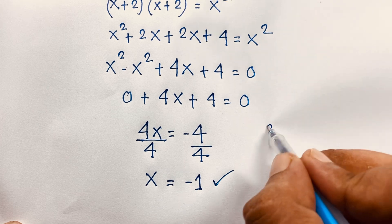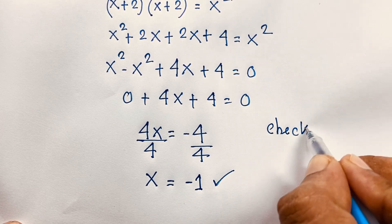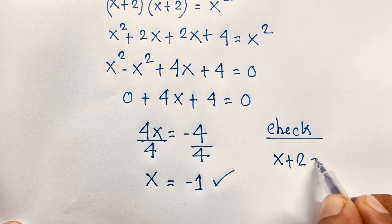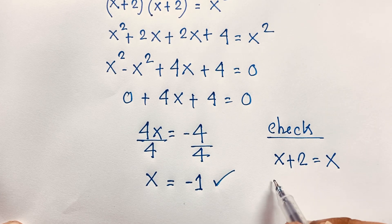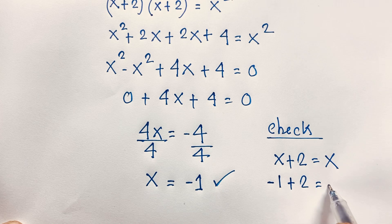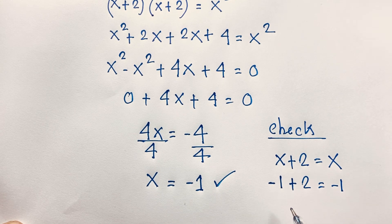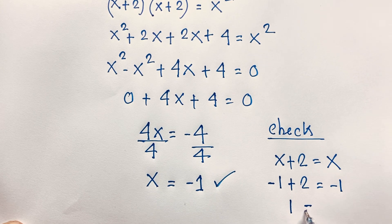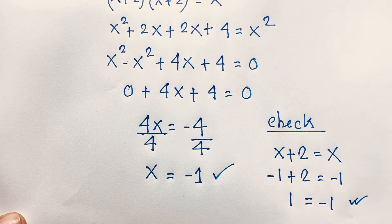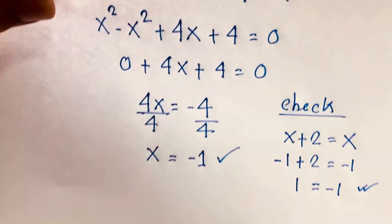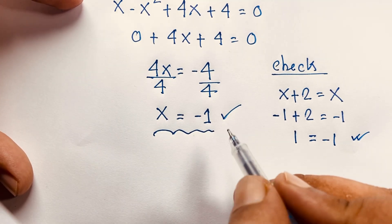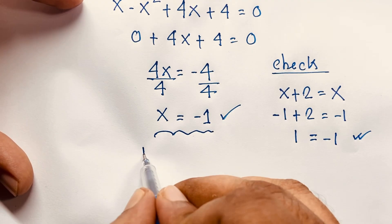Now let's verify our question which is x plus 2 is equal to x. With x equal to minus 1: minus 1 plus 2 is equal to minus 1. 2 minus 1 it will be positive 1, but this is negative 1. Left hand side and right hand side are not equal. So x is equal to minus 1 is not our answer. So here is no real solution.